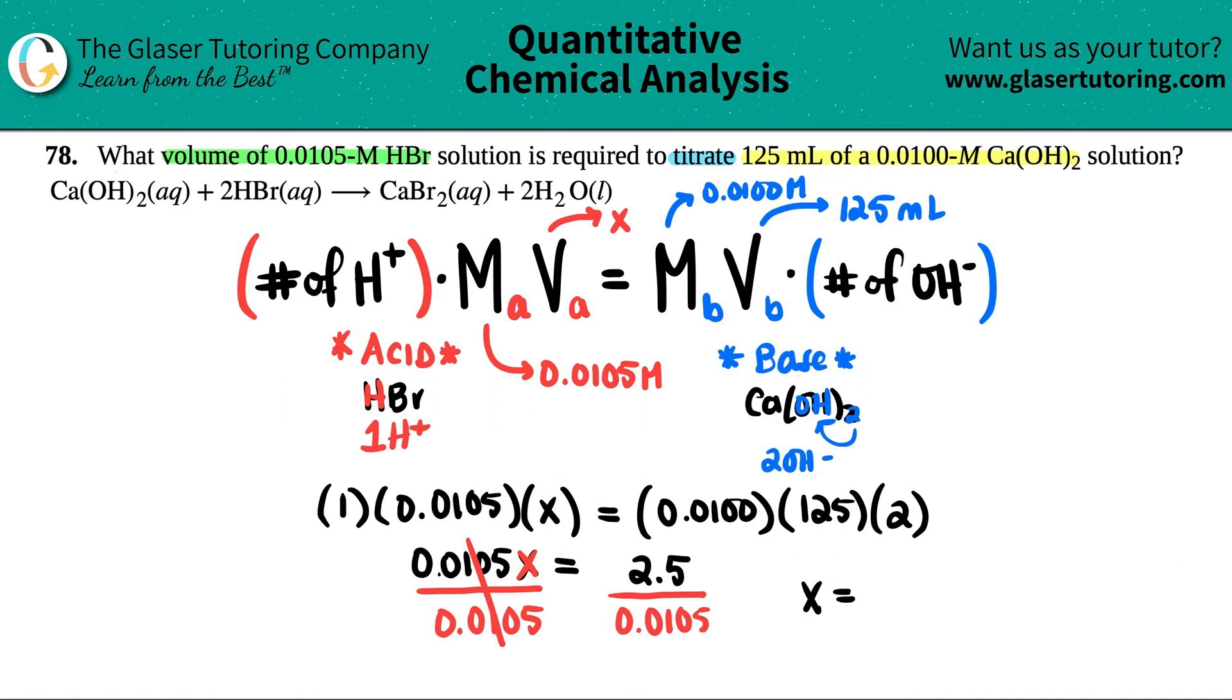And I get 238.1. Now, if I just look back and if we drew in sig figs, which I really don't care about sig figs, but you have the lowest number of three sig figs in these three numbers. So my answer should have three sig figs. So I'm going to cut off that 0.1 and now it's 238 mils of the acid, the HBr.